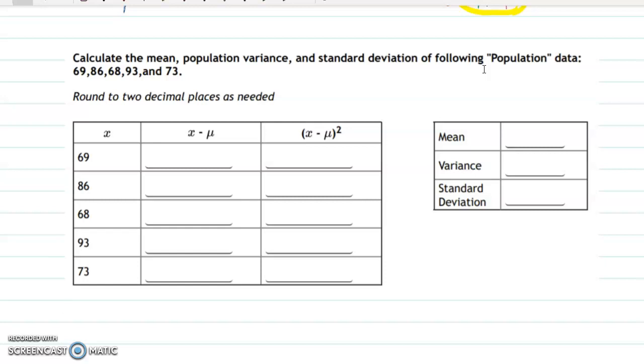Calculate the mean, population variance, and standard deviation of the following population data: 69, 86, 68, 93, and 73.